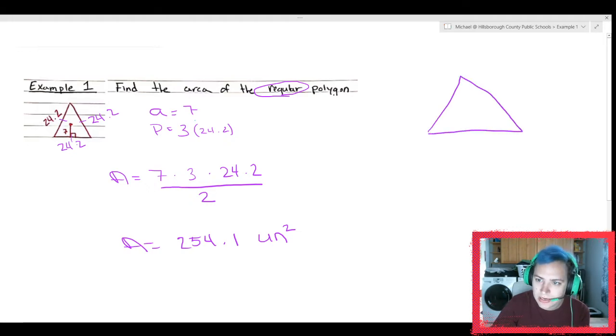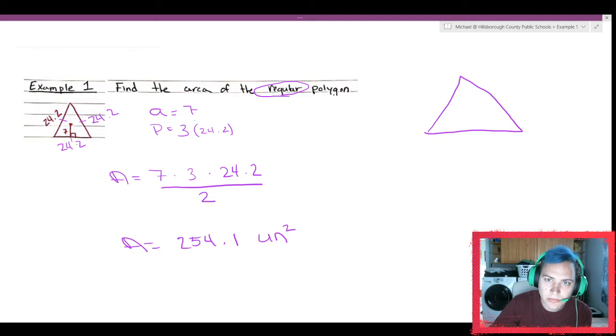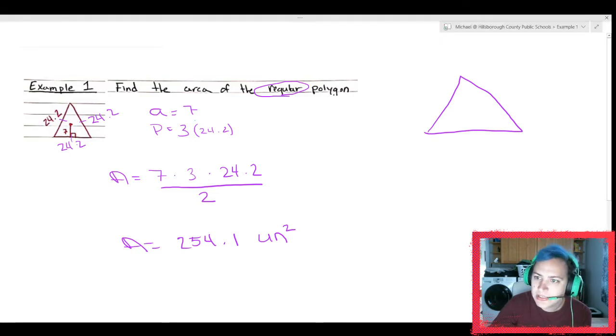Just to kind of help you make a little sense of what we did there, I want you to be mindful of what actually happened. If we took the center and I drew this radius and drew that radius and drew that radius, notice that it creates three triangles inside there. And even further, if I draw the apothem, the apothem, and the apothem, it creates six triangles. Remember, the area of this triangle right here is base times height divided by two.